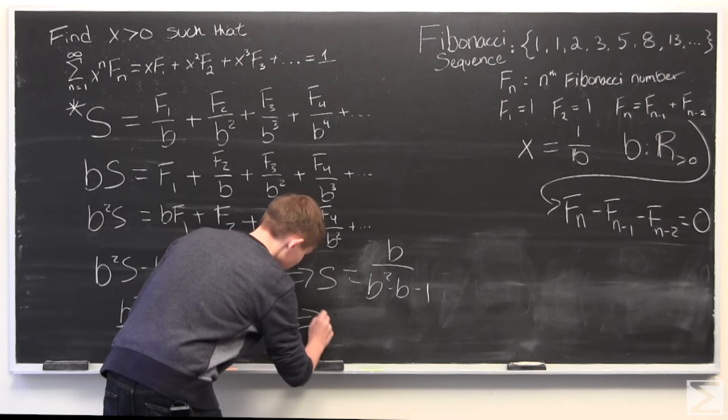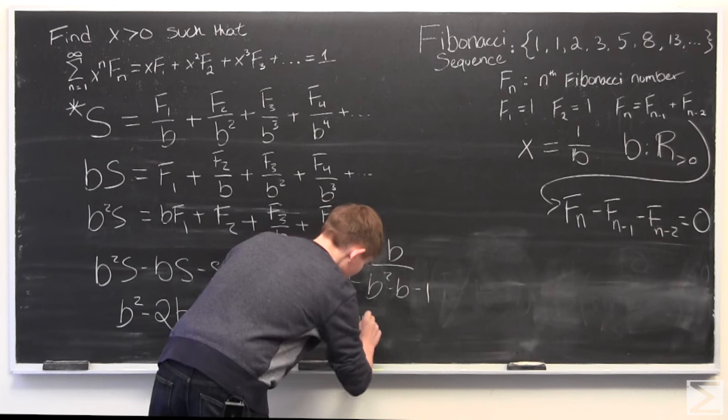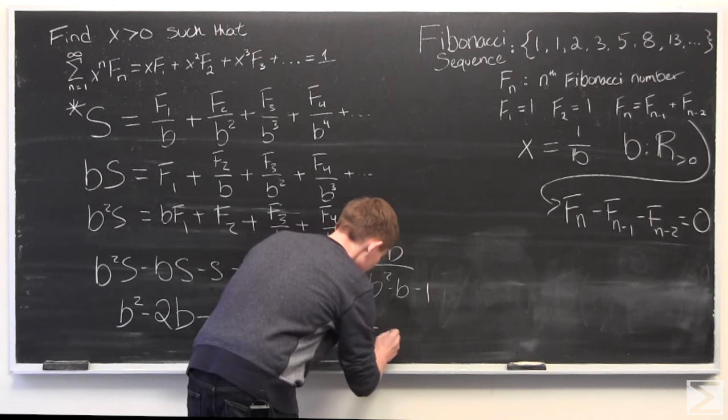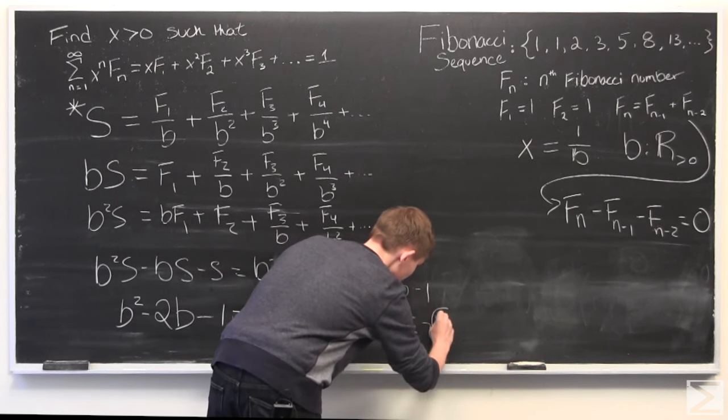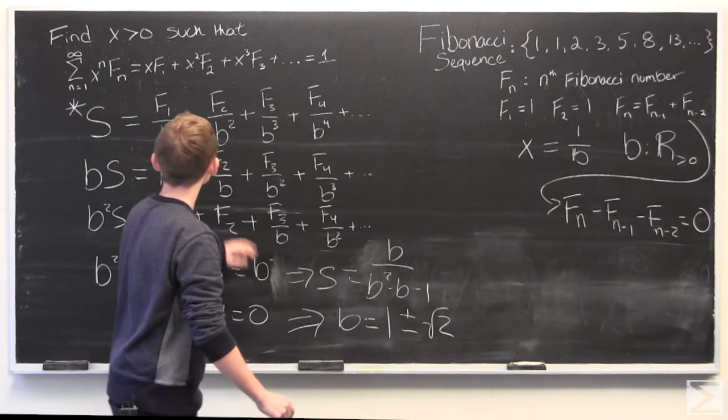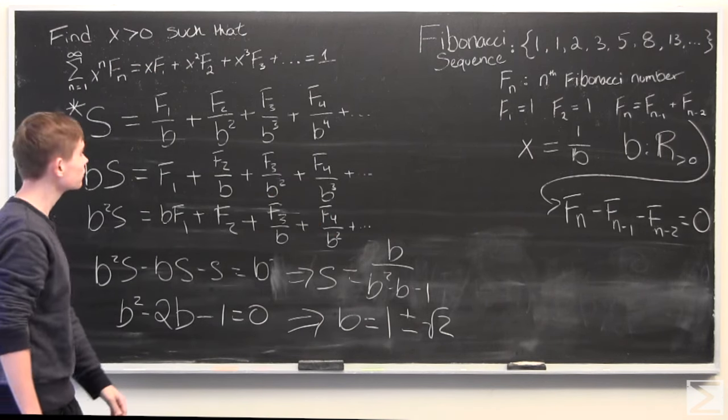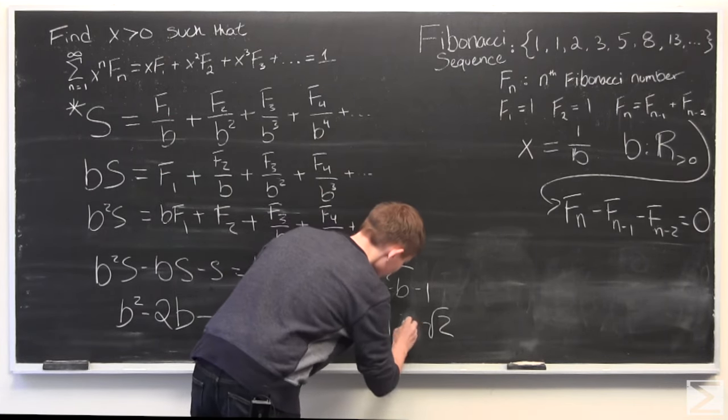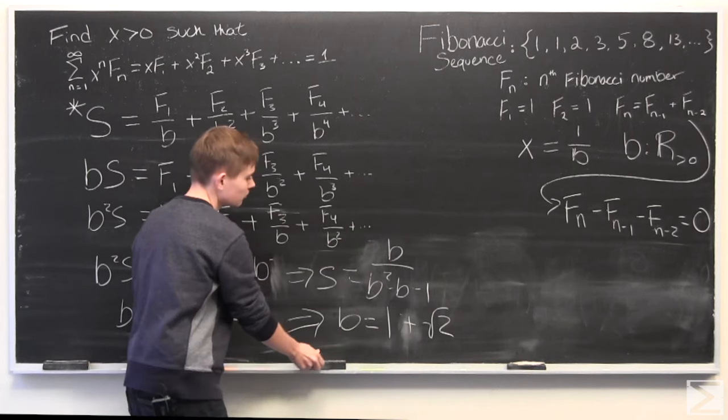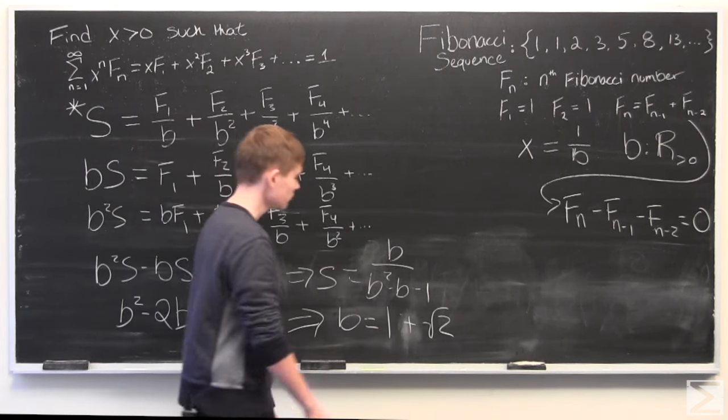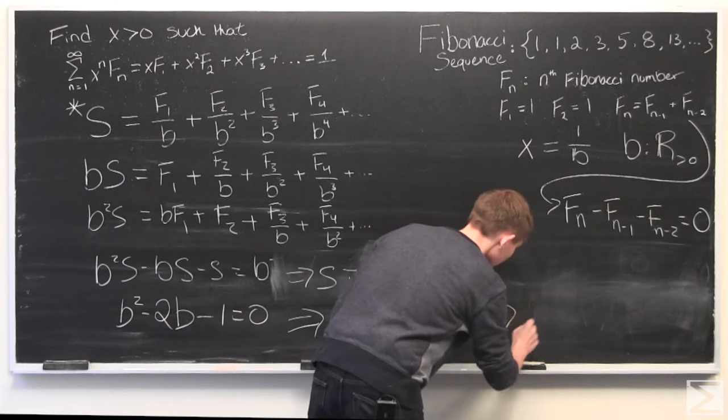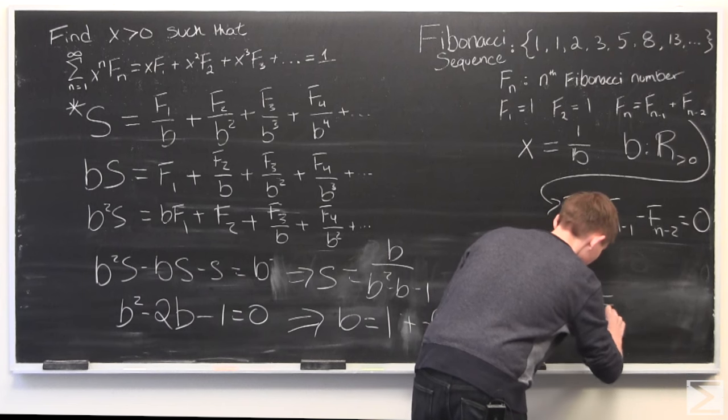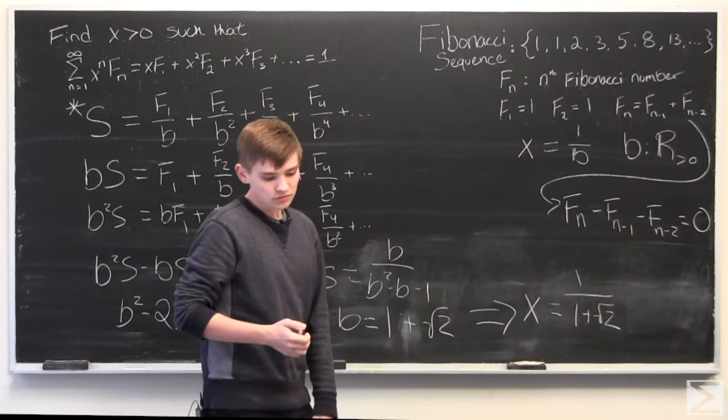And I won't do it explicitly, but I'll just tell you that when we use the quadratic formula, we get b is equal to 1 plus or minus root 2. And since we specifically asked for x greater than 0, we end up with b is equal to 1 plus root 2. And so, x is equal to 1 over 1 plus root 2.